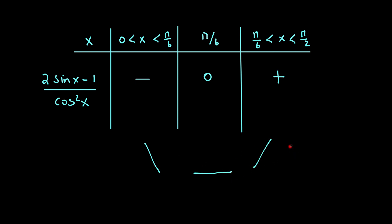So we get a negative, 0, and a positive gradient. Therefore we have a minimum turning point at (π/6, √3).